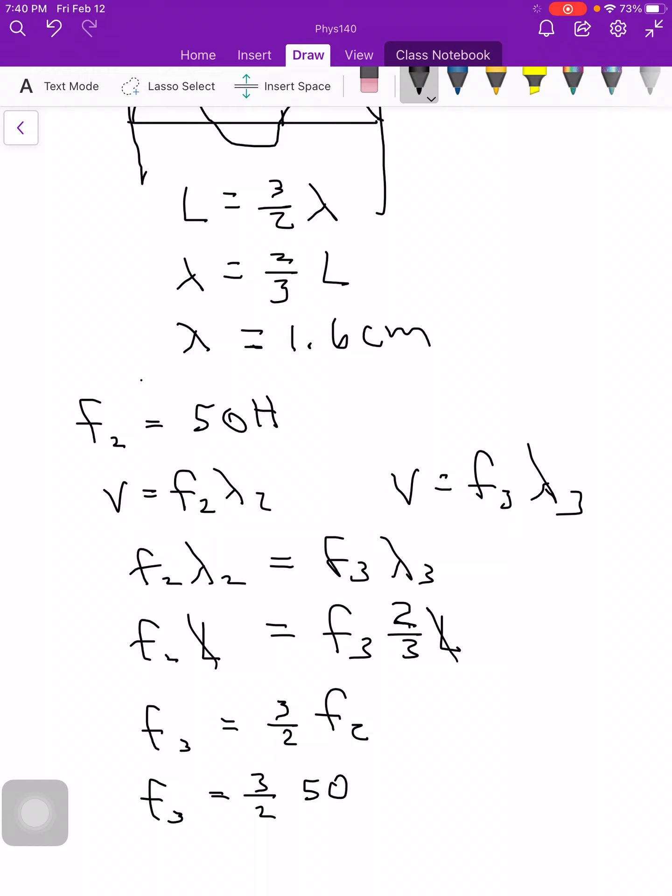And so when I multiply that out I get 3 times 50 is 150 divided by 2, so f3 is equal to 75 hertz.